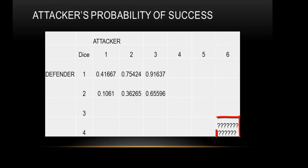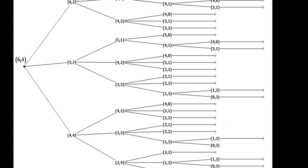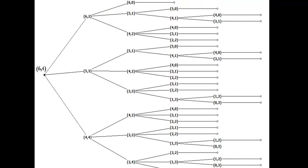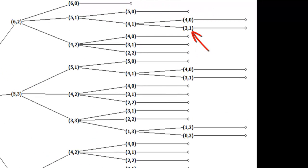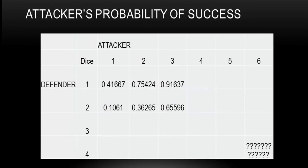We're going to need to know the probability of winning a six-on-four. To give you an idea of how complicated that is, here is a tree diagram of the six-on-four showing all the different ways that game can play out. Notice the tree diagram isn't finished, because in cases like a three-on-one or one-on-two, I just stopped — because I already know those probabilities. In the next video, we're going to work up to figuring out the probability of a six-on-four by completing this table.